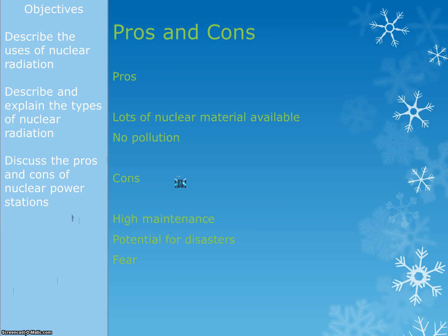For the higher exam you need to discuss pros and cons of nuclear power stations. The advantages are: there is lots of nuclear material available — loads of uranium and plutonium. And when a nuclear power station is running, it doesn't emit any pollution — no carbon dioxide, no methane, no sulphur dioxide — so it has no effect on the greenhouse effect and doesn't contribute to acid rain. They are very clean power stations.